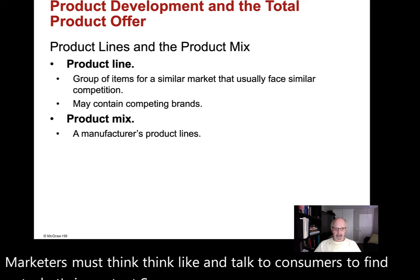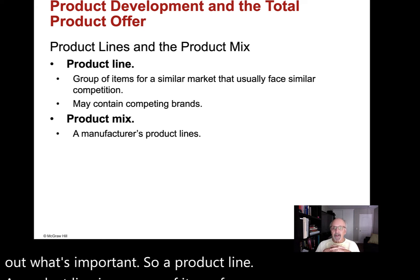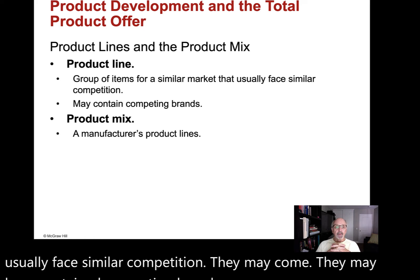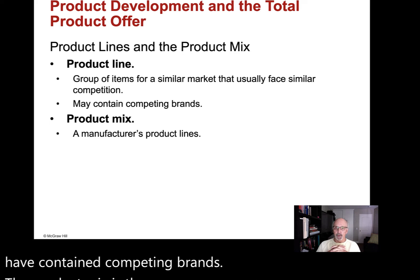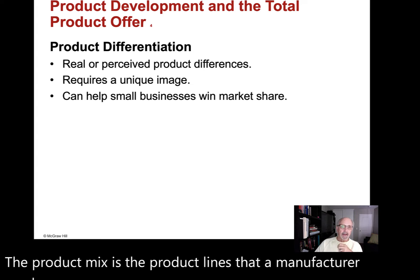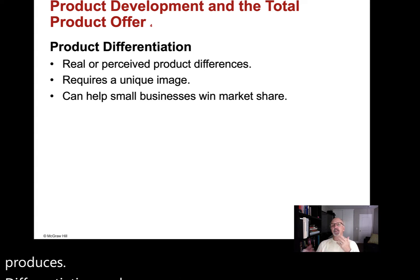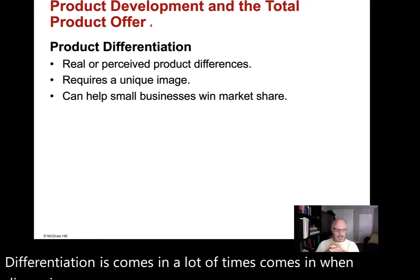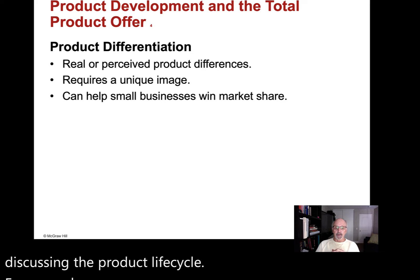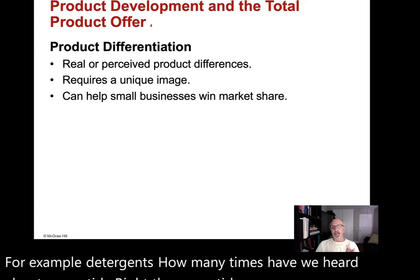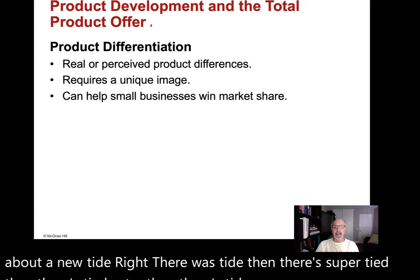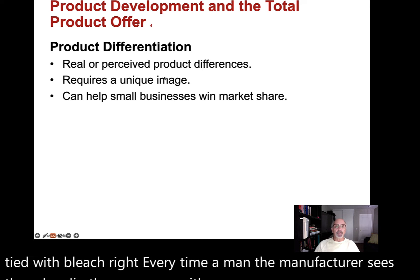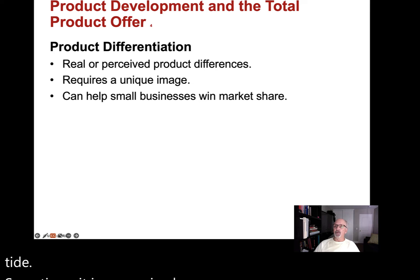A product line is a group of items for a similar market that usually face similar competition, and they may contain competing brands. The product mix is the product lines that a manufacturer produces. Differentiation refers to real or perceived product differences. For example, with detergents — there was Tide, then Super Tide, then Tide Extra, then Tide Pods, then Tide with bleach. Every time the manufacturer sees sales slip, they come up with a new Tide. Sometimes it's a perceived difference; sometimes it's an actual change in the product.